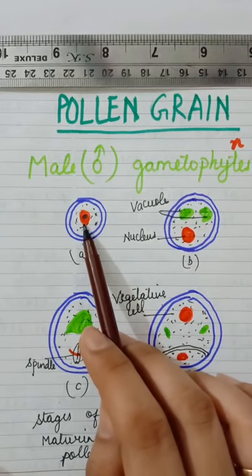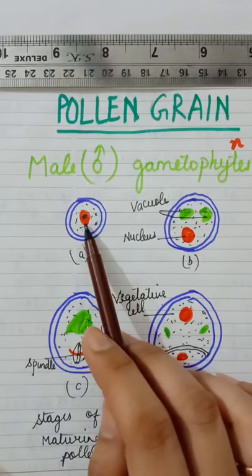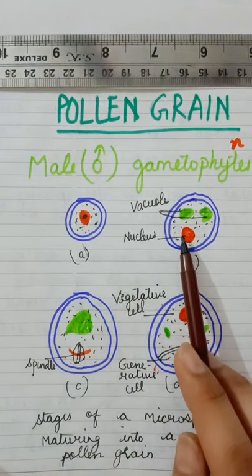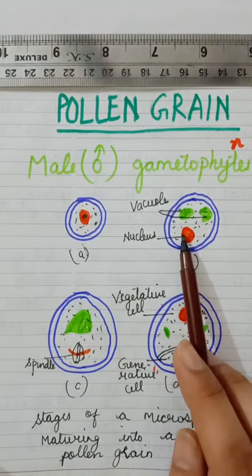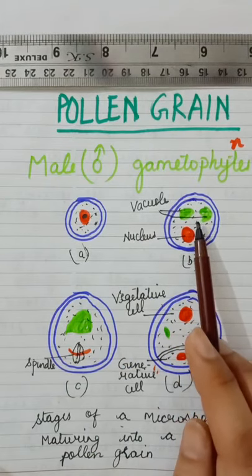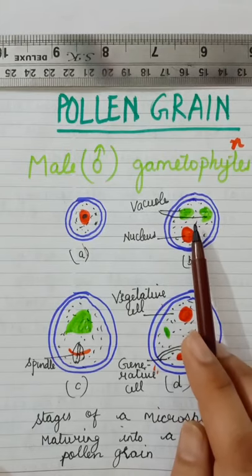Prior to first mitotic division, the nucleus of the microspore becomes displaced to peripheral position. The nucleus starts displacing to peripheral position and here large vacuole starts appearing. Simultaneously, the wall of microspore continues to differentiate.